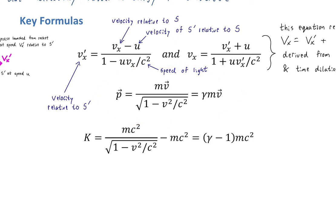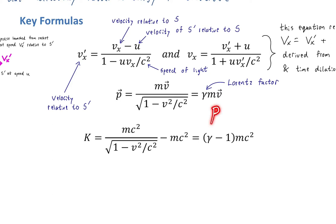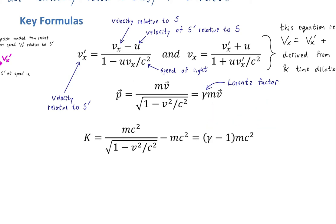Now let's move on to momentum. Relativistic momentum is represented by P. Unlike classical momentum, relativistic momentum is not just equal to MV — because classically, momentum is just mass times velocity. With relativity, that can't be the case, because then you could have a particle go faster than the speed of light. So relativistic momentum has a Lorentz factor in it.